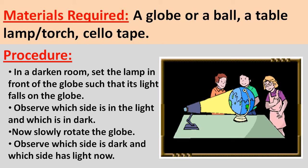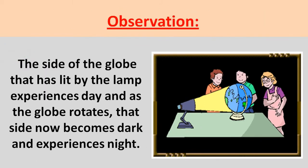Now, find out the sticker of the child — is it in a light area or in a dark area? Now slowly rotate the globe and observe which side is in dark and which side has light. Find out which side the sticker of the child is on. You will observe that the side of the globe lit by the lamp will experience day. As the globe rotates, that side becomes dark and experiences night. At a time, only one side of the globe gets light and experiences day, while the other side experiences night.